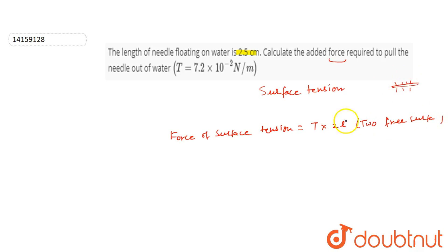So we are going to use 2L. Surface tension will be 7.2 × 10 to the power minus 2, times 2 times length 2.5 cm times 10 to the power minus 2. Solve this.